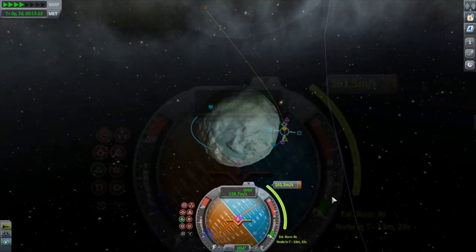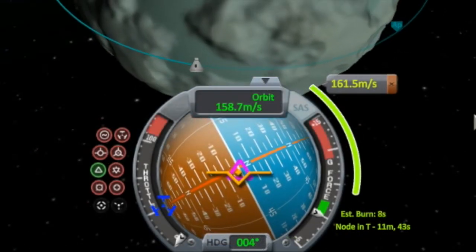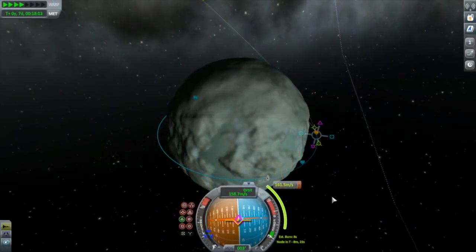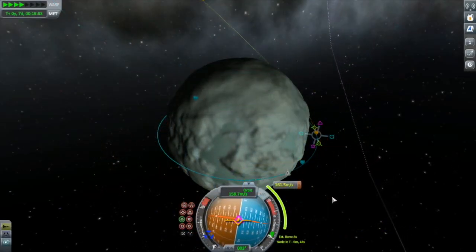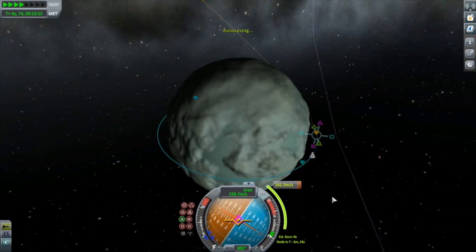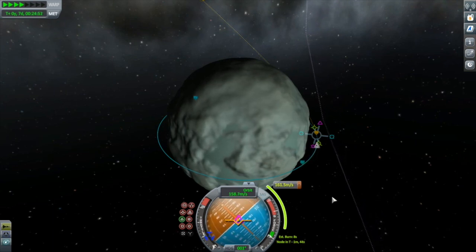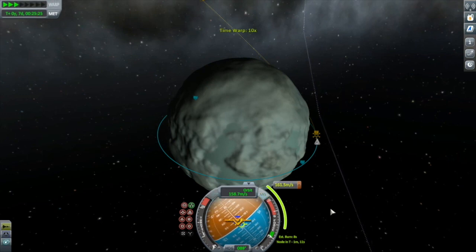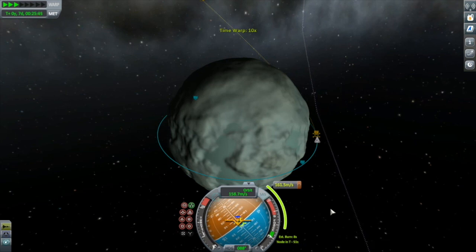This will get us exiting Minmus' sphere of influence with the necessary 230 meters per second, which will put our periapsis well into Kerbin's atmosphere. Looking back at the video, we can see that the actual burn was 161.5 meters per second. Not bad. By the way, this technique will not only work for Minmus in the moon, but can actually be used to calculate the necessary ejection burn to transfer between any two bodies. You now have the ability to calculate for yourself most of the numbers you see on those delta V maps. And with that, I'll bring this episode to a close. I thank you for watching and hope to see you again next time.